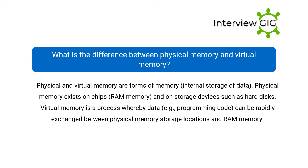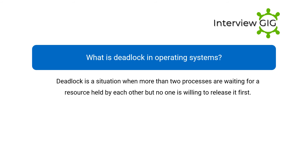What is the difference between physical memory and virtual memory? Physical and virtual memory are forms of internal storage of data. Physical memory exists on chips (RAM) and on storage devices such as hard disks. Virtual memory is a process whereby data, such as programming code, can be rapidly exchanged between physical memory storage locations and RAM.